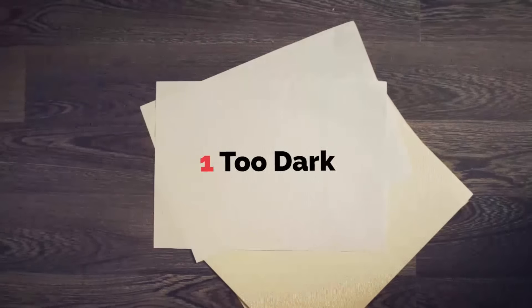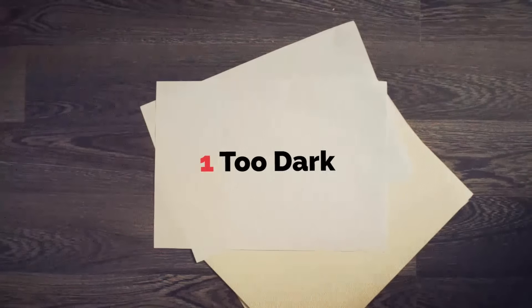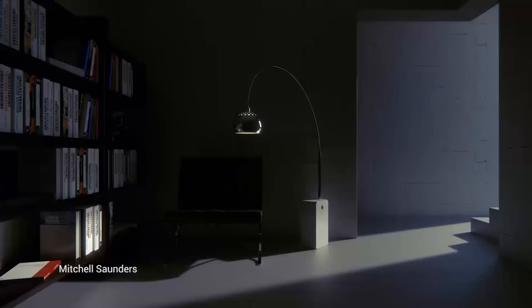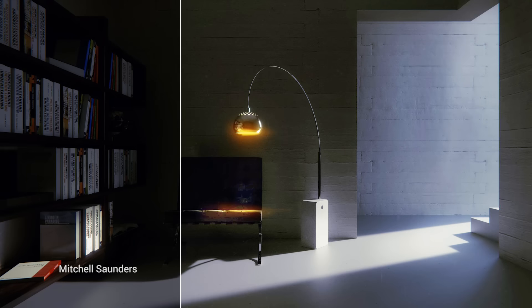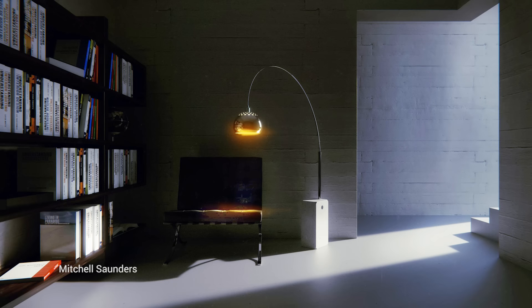Let's get started with number one mistake — a very common mistake — it's too dark. Let's start off by picking the image by Michelle Saunders. How can we make it better? I think we can really make it better just by raising the exposure and by tweaking the RGB curves. We can make it a lot more readable.